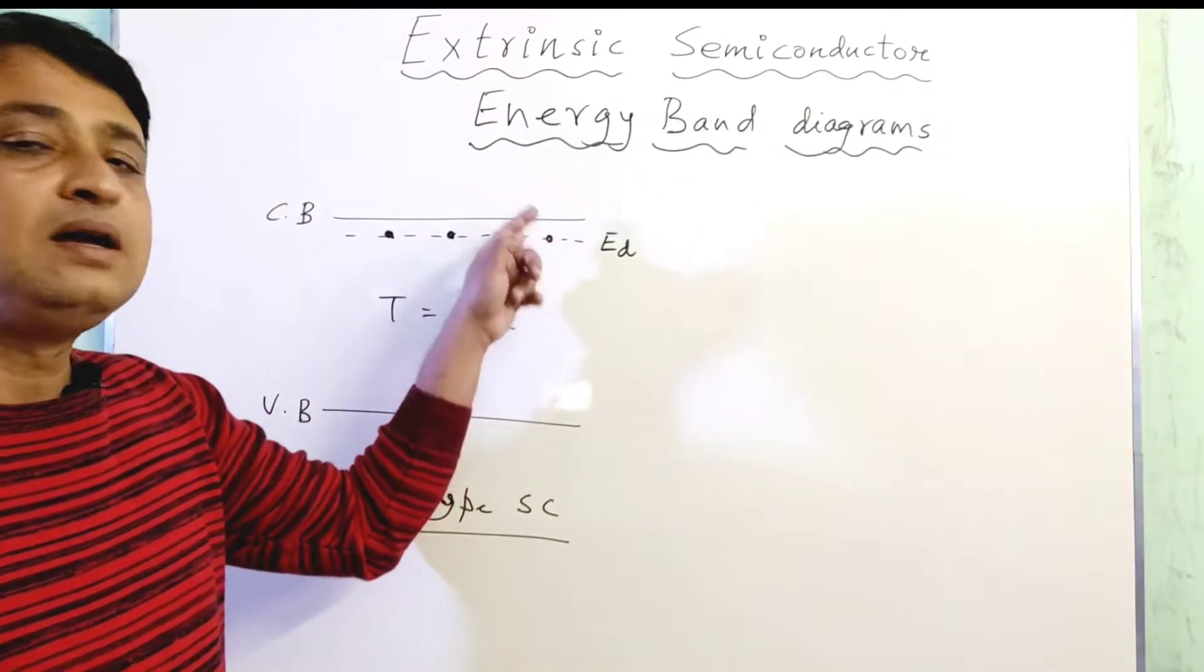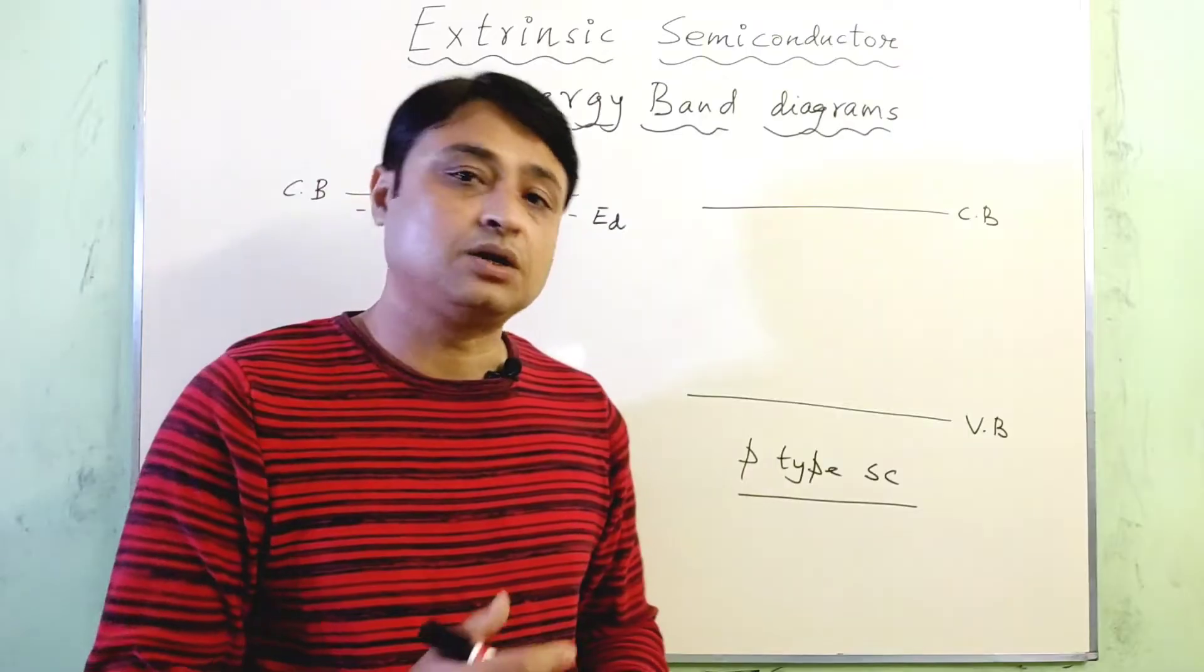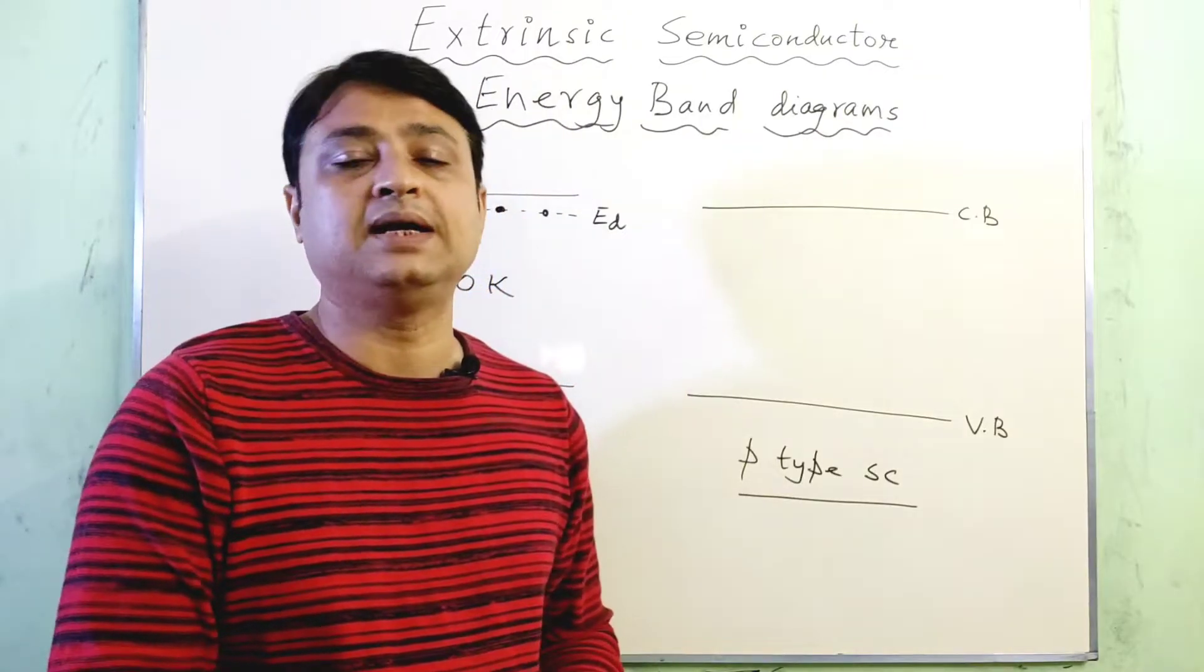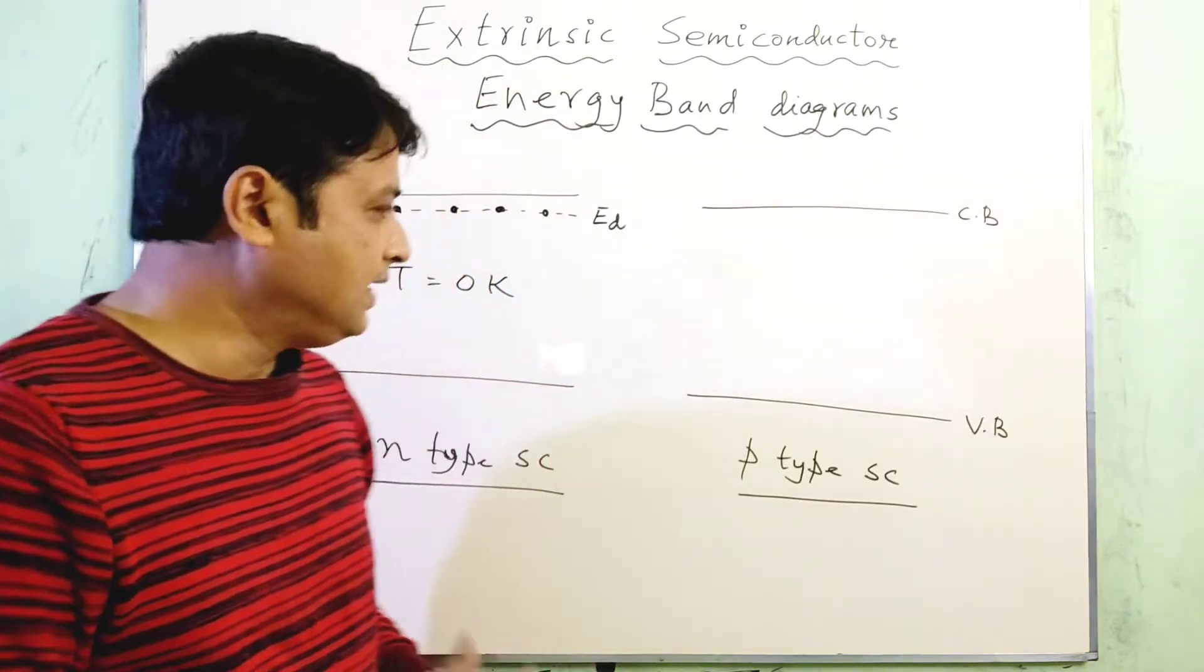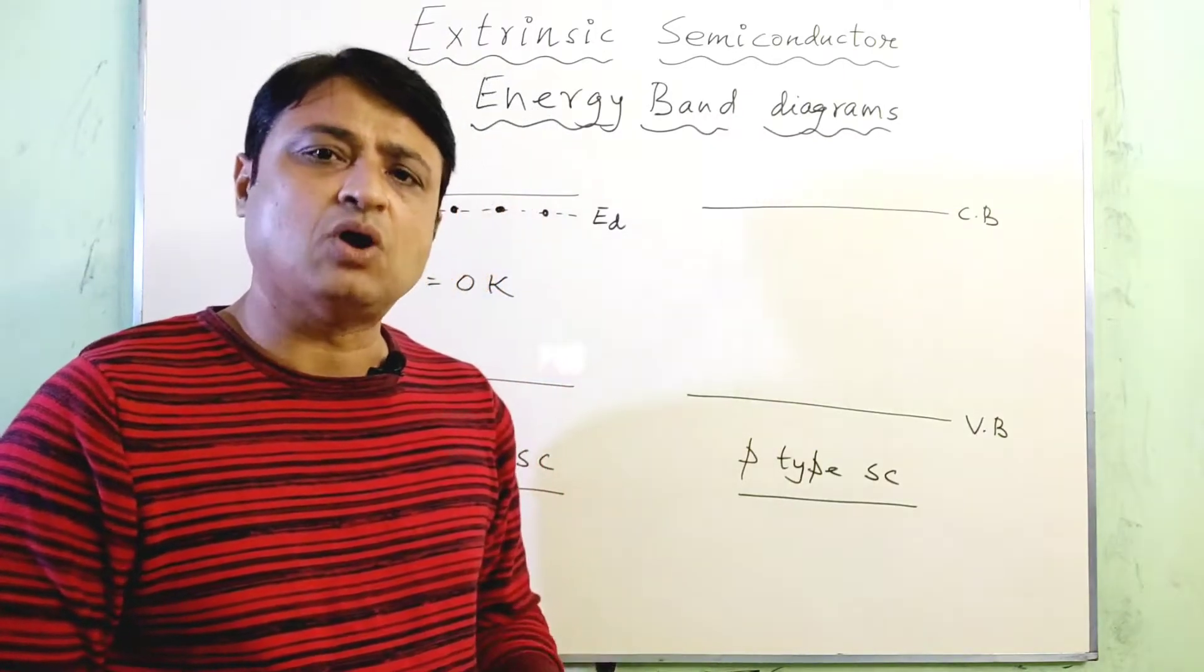Now for the p-type semiconductor, what we have done is we have introduced a group 3 atom inside the silicon crystal. Let us talk about that we have introduced a boron atom or an aluminium atom inside the silicon structure.